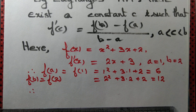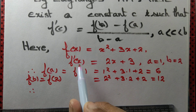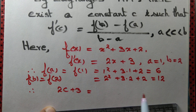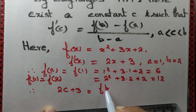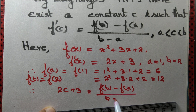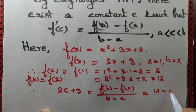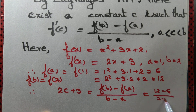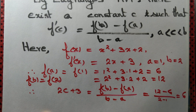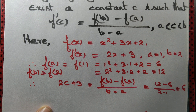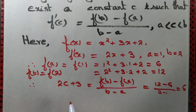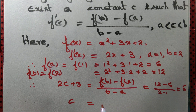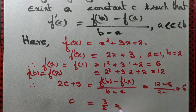Therefore, there exists a constant c such that f'(c) = 2c + 3 equals [f(b) − f(a)] / (b − a) = (12 − 6) / (2 − 1) = 6/1 = 6. Solving: 2c + 3 = 6, so 2c = 3, giving c = 3/2 = 1.5.